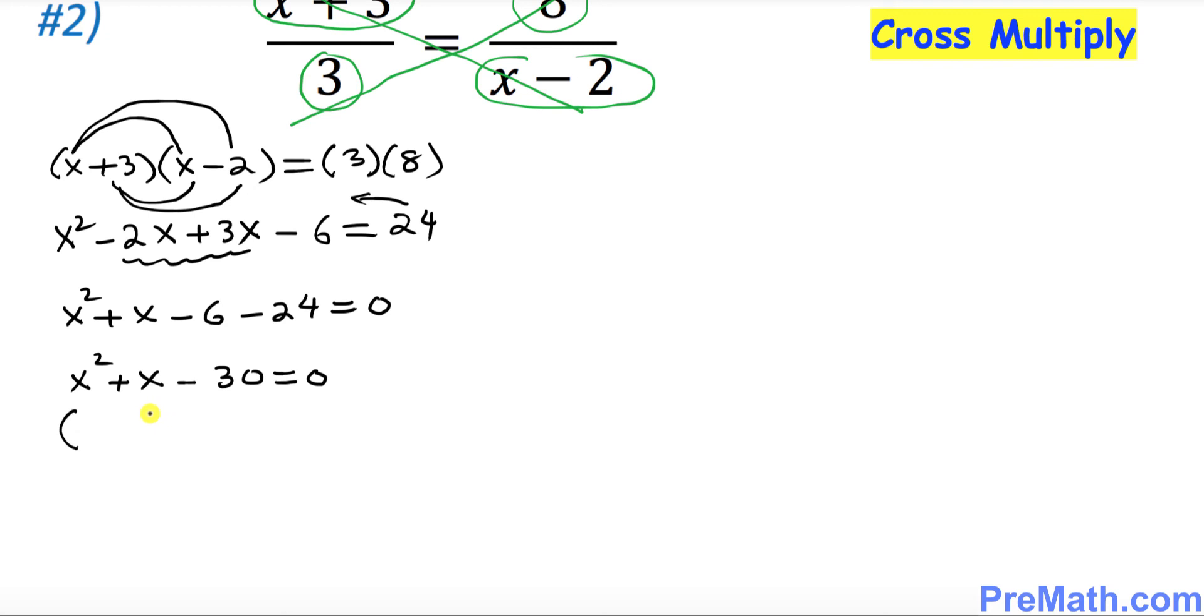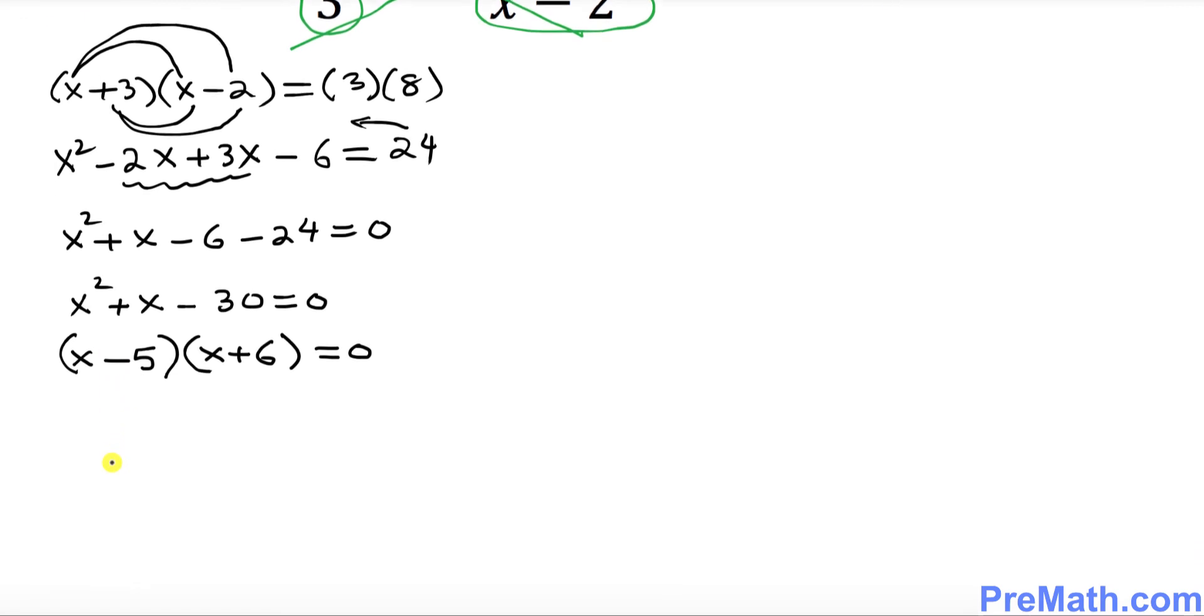There are two possible parentheses factors: put down x over here. The possible factors are 5 and 6. Since this is a plus 1, that means this has got to be positive and this has got to be negative. The next step is we are going to separate these factors.